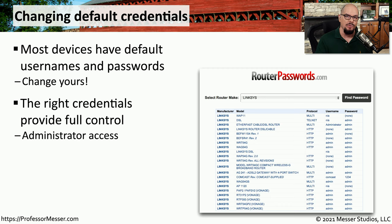With DHCP snooping, your switch is always examining the DHCP conversations, and it's building its own table as to what IP addresses are associated with which MAC addresses on that switch. This allows the switch to filter out any traffic that doesn't match this predefined list of IP addresses and MAC addresses. So if someone tries to statically assign an IP address, it would be filtered by the switch. Or if an attacker tries to create their own DHCP server or send an invalid traffic pattern, all of that communication will be automatically filtered by DHCP snooping.